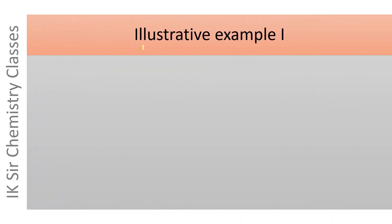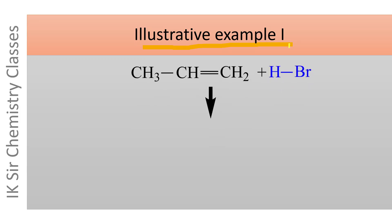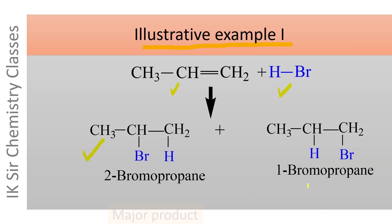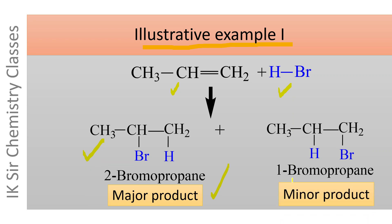Let us see illustrative example number one of a regioselective reaction. This is propene. When it is treated with HBr (hydrogen bromide), one product formed is 2-bromopropane and the other product is 1-bromopropane. Here 2-bromopropane is the major product while 1-bromopropane is the minor product. Two structural isomers of the product bromopropane are possible, and out of these, 2-bromopropane is formed predominantly as the major product. Hence this is an example of a regioselective reaction.